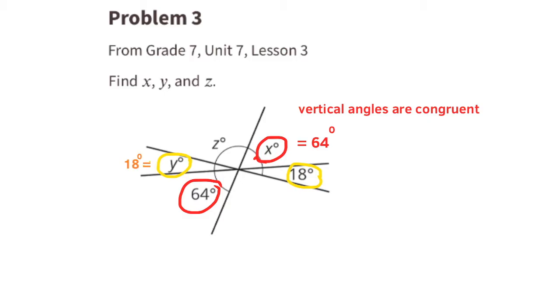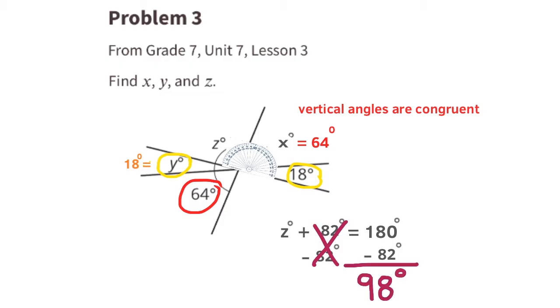Z is a little bit trickier because its vertical angle is missing its measure. Angles Z, X, and 18 degrees are along a straight line, so we know that the sum of those three angles will be 180 degrees. Z plus 64 plus 18 equals 180. 64 plus 18 is 82, so we can rewrite it as Z plus 82 equals 180. To solve for Z, we need to subtract 82 from both sides of the equal sign. 82 minus 82 is 0, and 180 minus 82 is 98, so angle Z is 98 degrees.